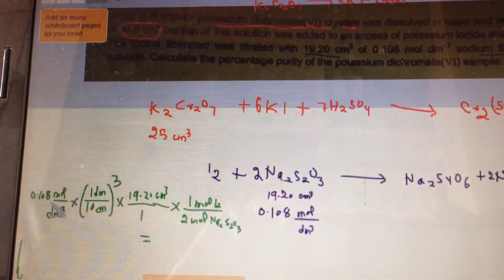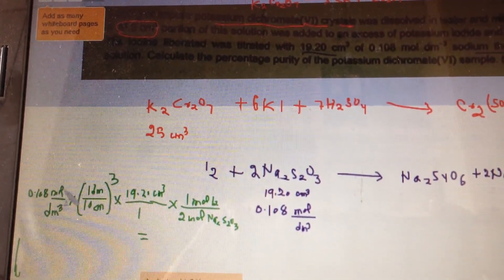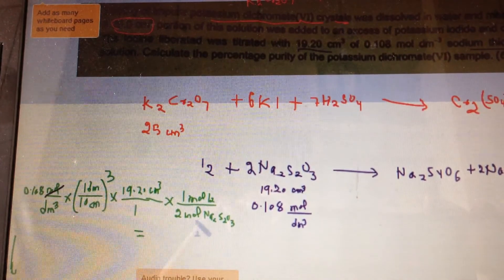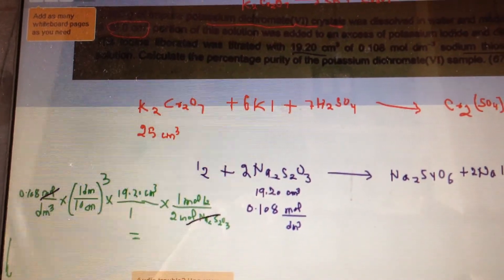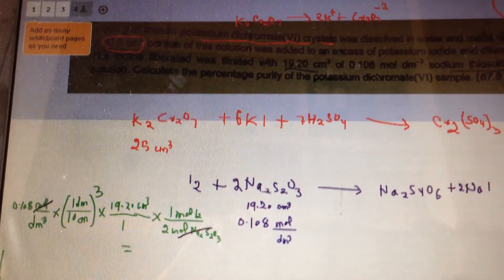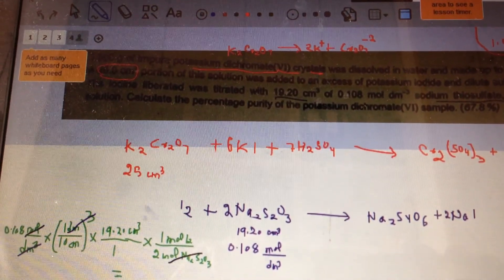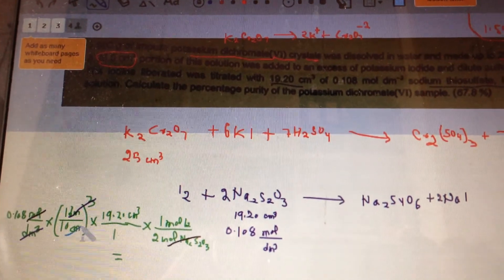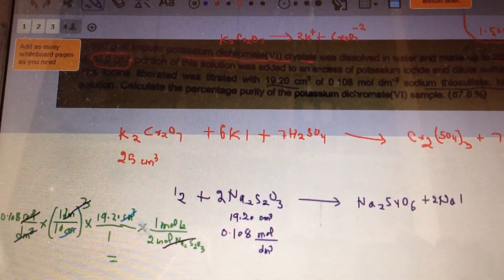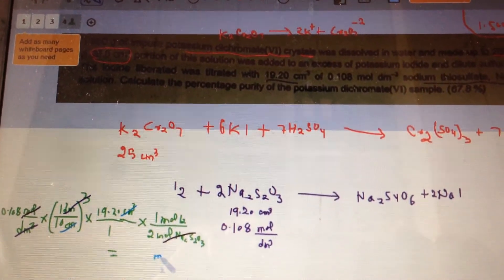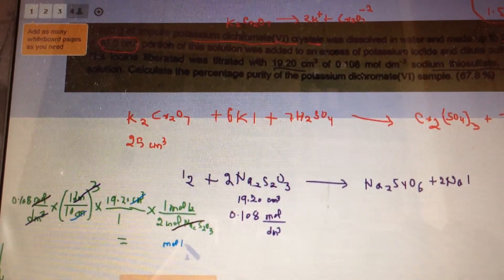So here, moles of Na2S2O3 cancels out with the moles, so watch for the color combinations here. Decimeter cubed cancels out with decimeter cubed. Then centimeter cancels out with centimeter. At the end we are left with moles of I2.